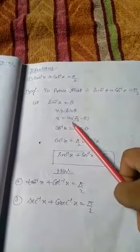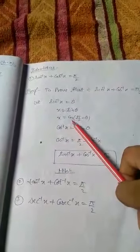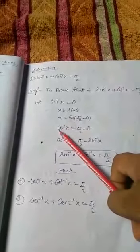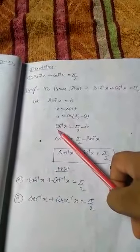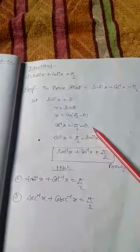Now sin θ can be written as cos(π/2 - θ). Now we take cos to left side, so it changes into cos inverse x is equal to π/2 - θ.